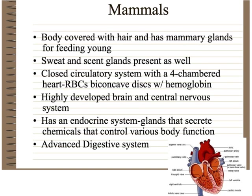Mammals are the group you should be most familiar with — this is what we are. The body is covered with hair; fur and hair are the same thing, we just use different words. They have mammary glands, which are modified sweat glands that produce milk for feeding the young, and scent glands for communication. They have a four-chambered heart: when blood goes to the lungs and comes back, it returns to a different chamber with no mixing — much more efficient. Mammals also have a highly developed brain and nervous system, and advanced digestive and endocrine systems.